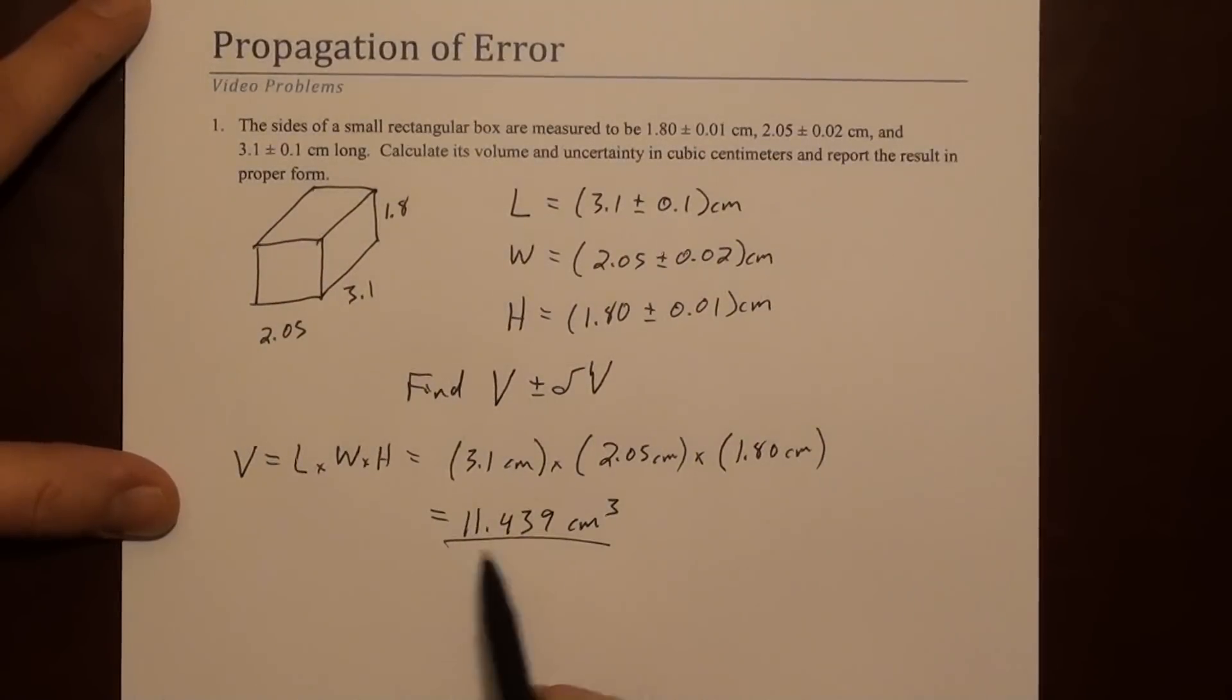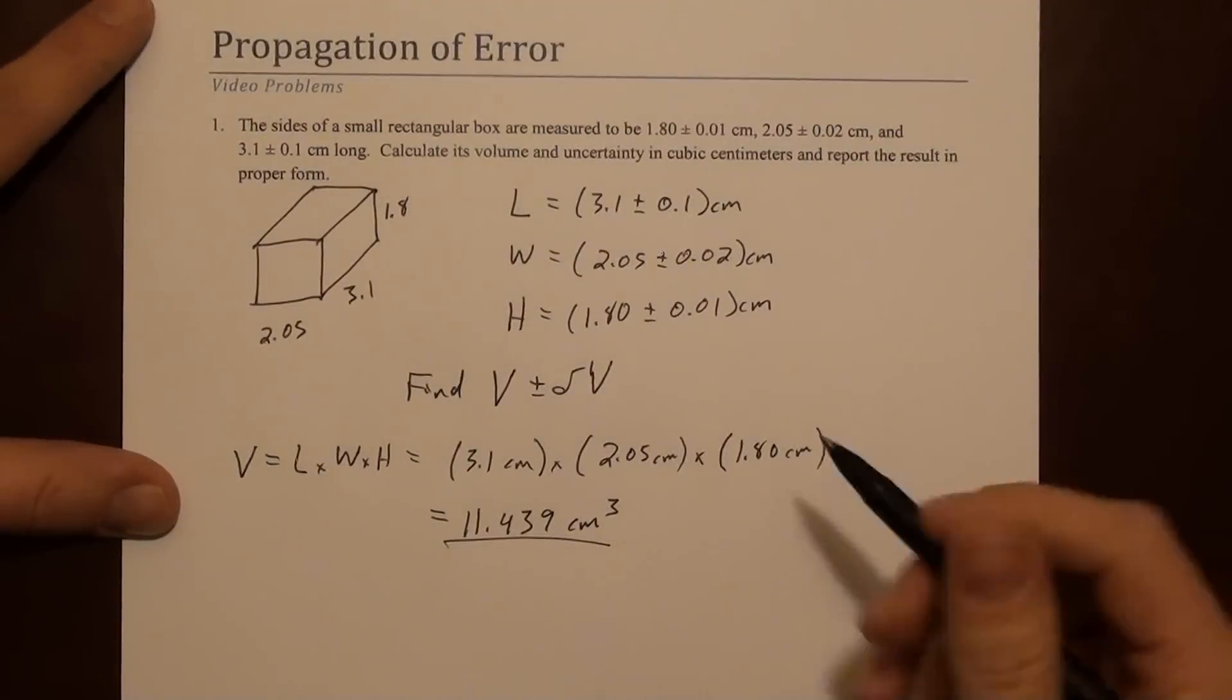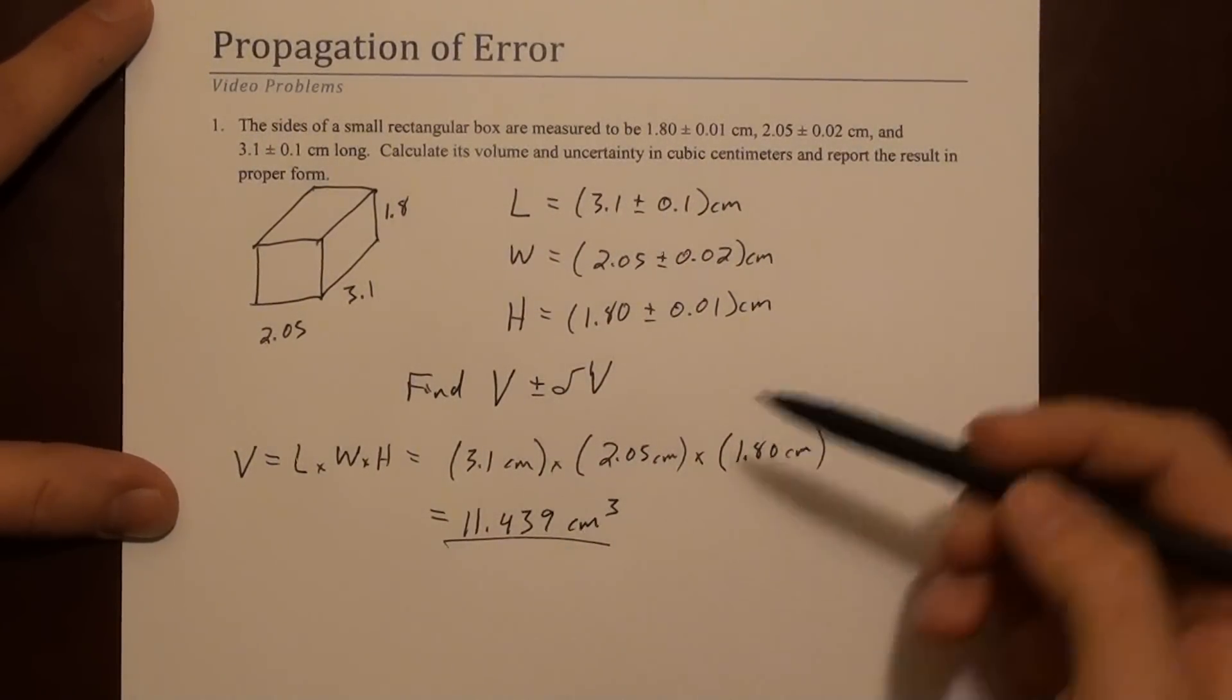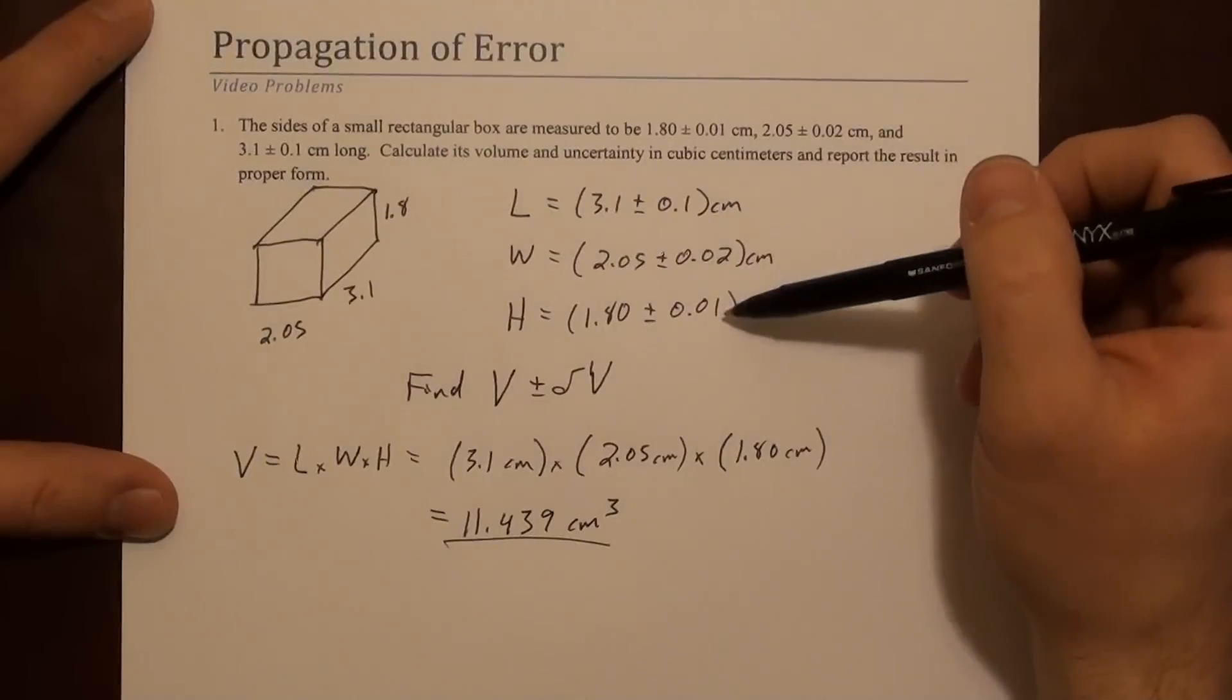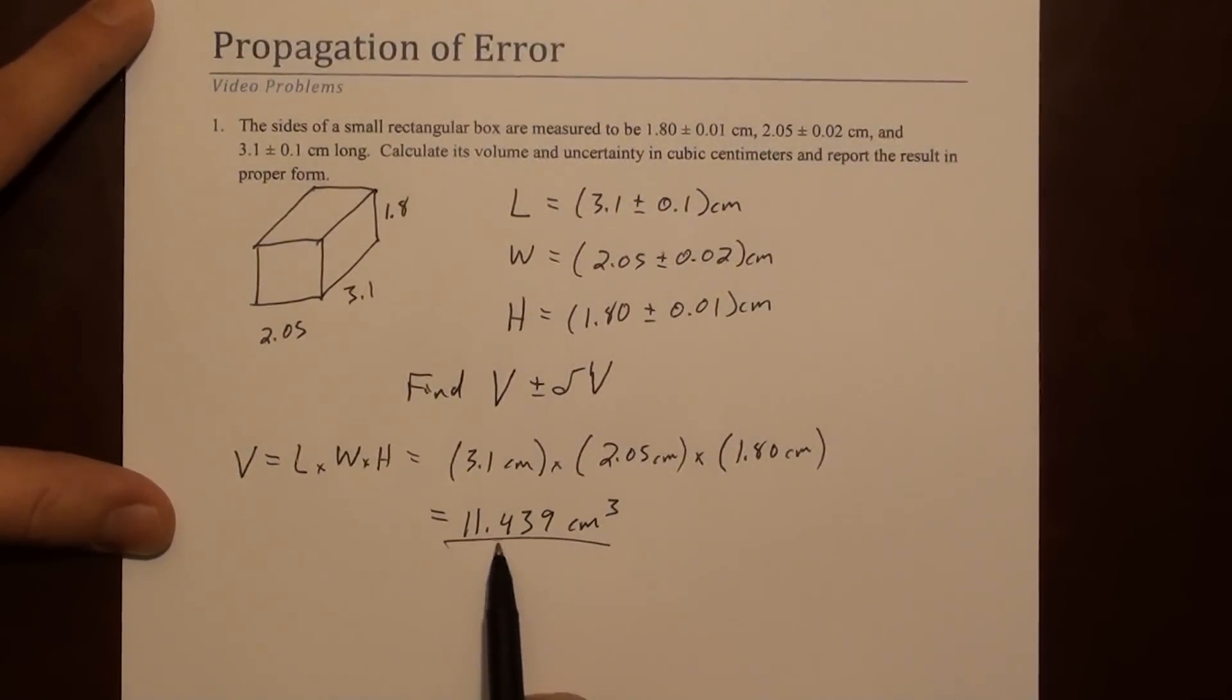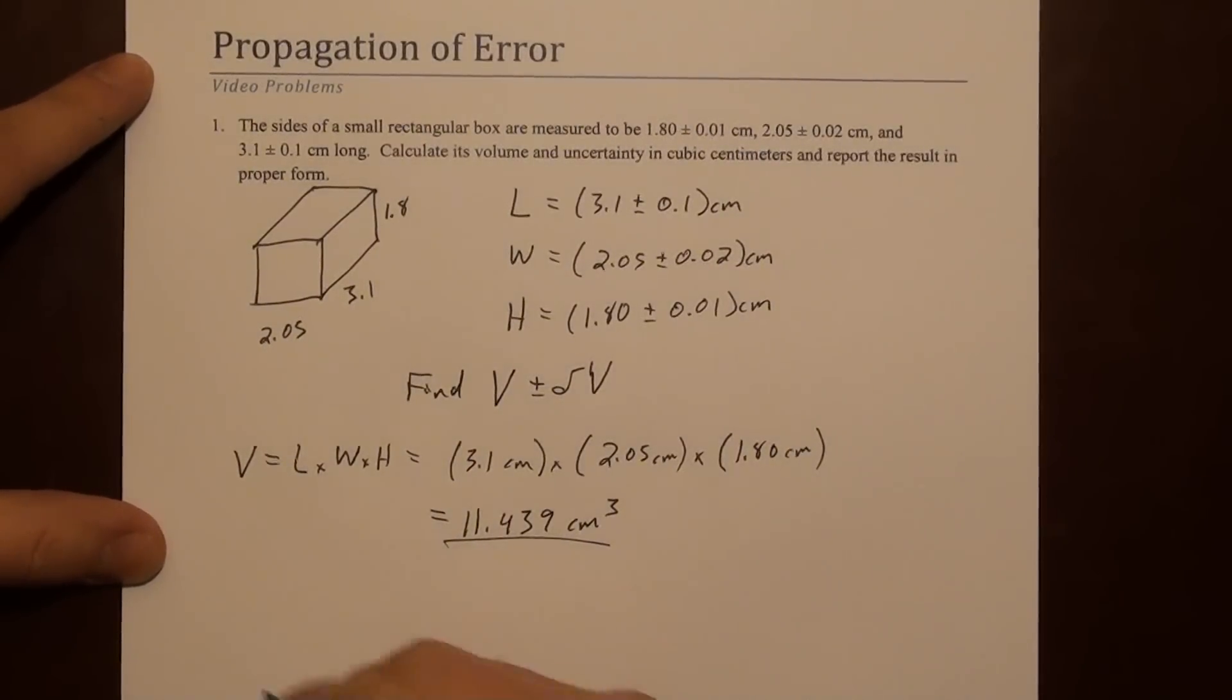We just wrote down all of the digits that the calculator gave us. So we should ask ourselves how many of these digits can we trust. Because I know how much I can trust the length, the width, and the height. So now I need to know how many of these digits are meaningful and how many of them are just buried in the error. So we'll find the error.